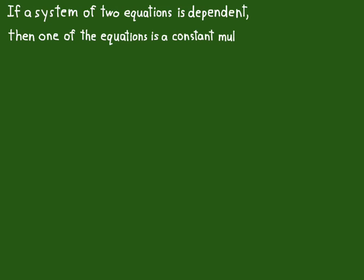If a system of two equations of two unknowns is dependent, then one of the equations is a constant multiple of the other.